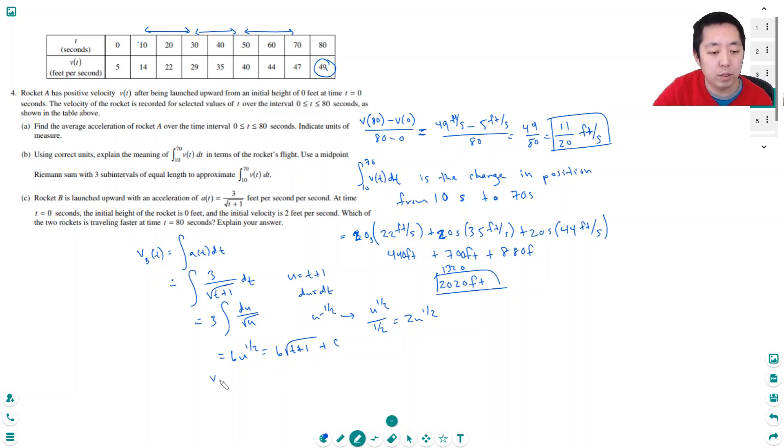Now to find this constant, I know at time 0 it has to equal 2. So when I plug in 0, I get 6 square root of 1 plus c, which equals 6 plus c. That means c would have to equal negative 4. So my final solution for the velocity of t is equal to 6 root t plus 1 minus 4.